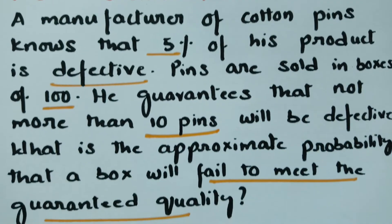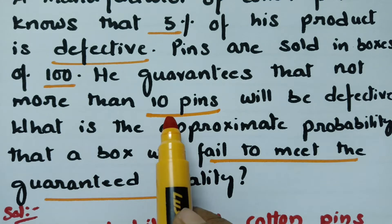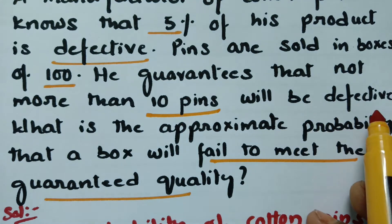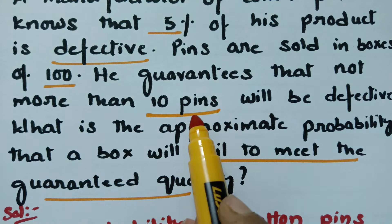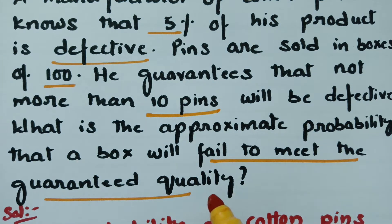What is the approximate probability that the box will fail to meet the guaranteed quality? The guarantee is that not more than 10 pins are defective. If more than 10 pins are defective, then he fails to meet the guaranteed quality. So we have to find the probability that the number of defective pins is more than 10.